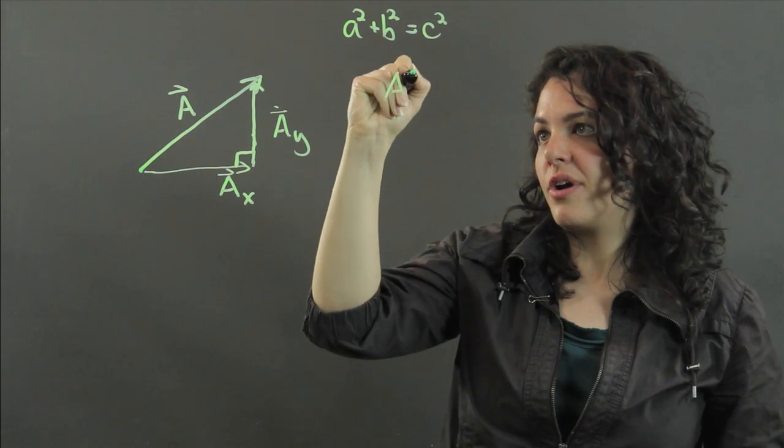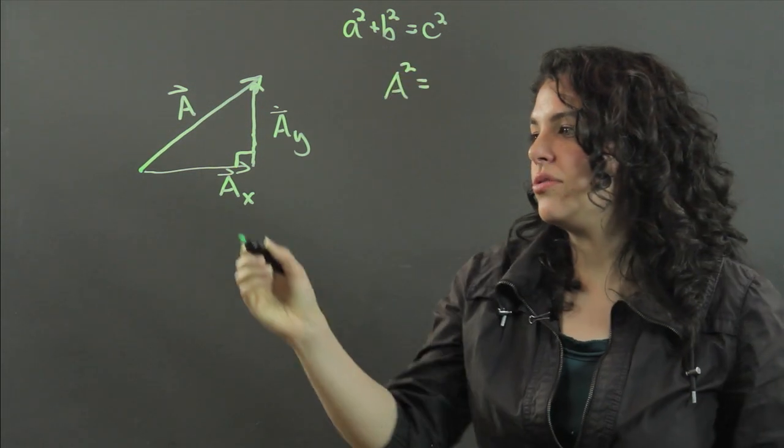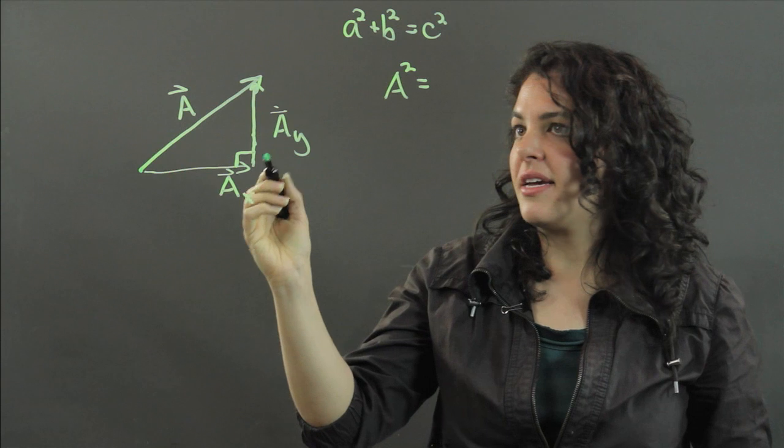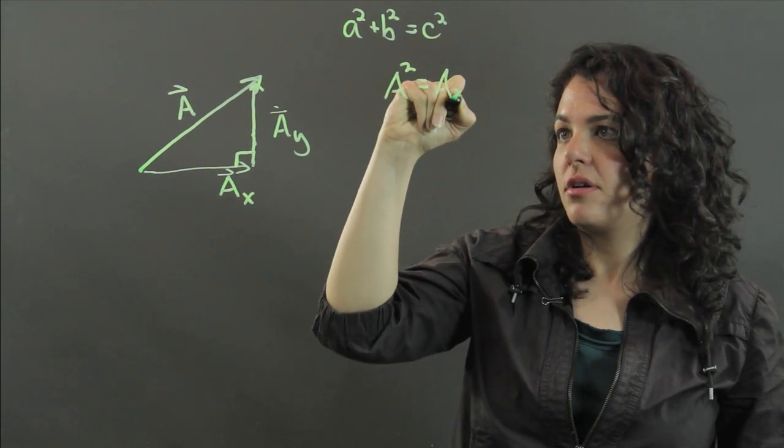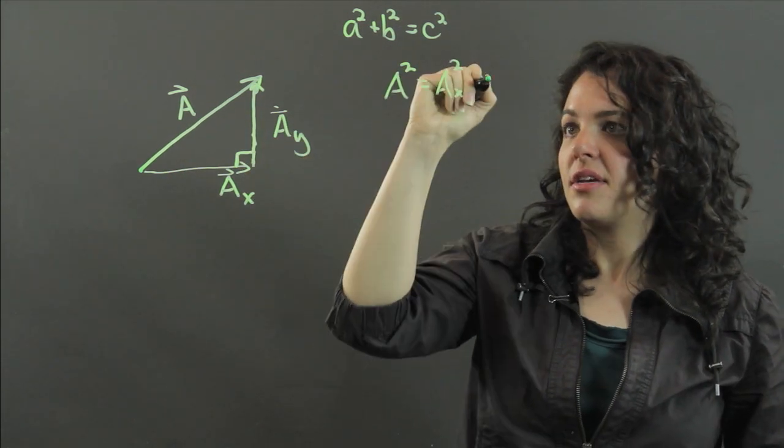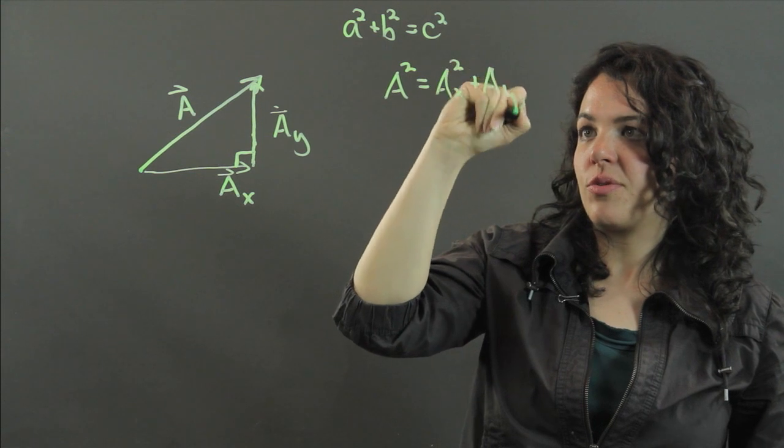So A squared is equal to this length A sub x squared, and this length A sub y squared added to each other.